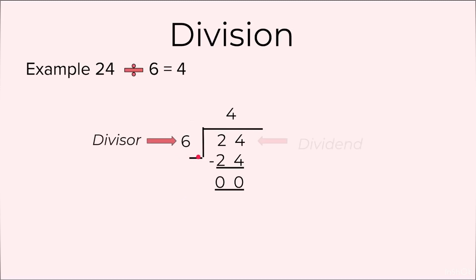6 is called the divisor, 24 is called the dividend, 4 is called the quotient, and 0 is called the remainder.